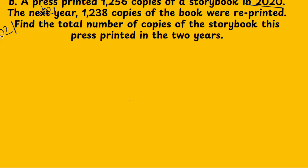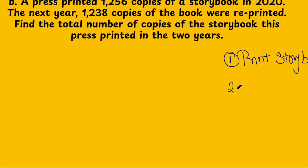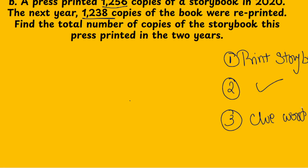The first step: analyze the story — it is about printing a storybook. Second step: underline the numbers — we have two numbers. Third step: find the clue word, which is 'total number,' meaning we need to add the two numbers.